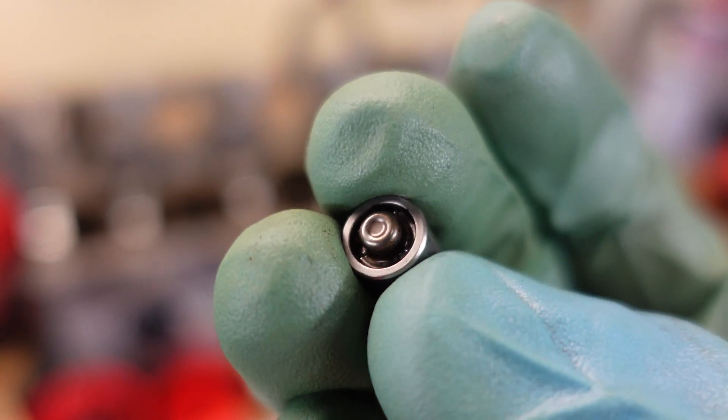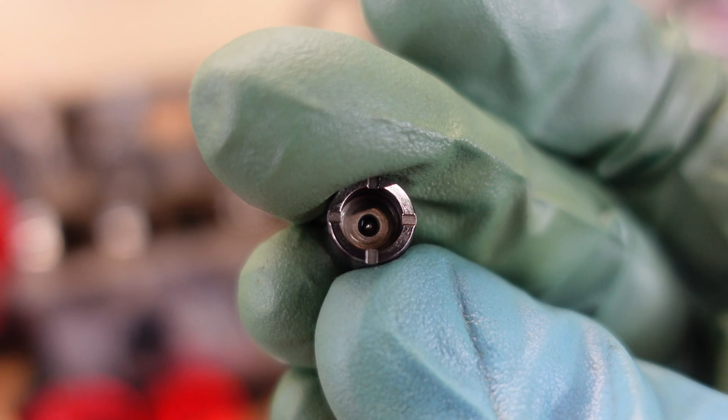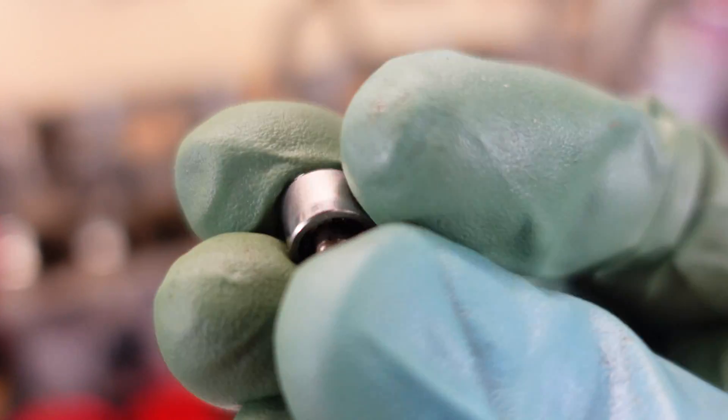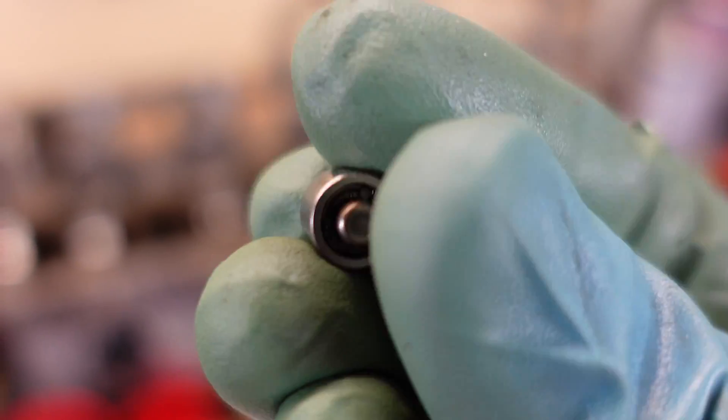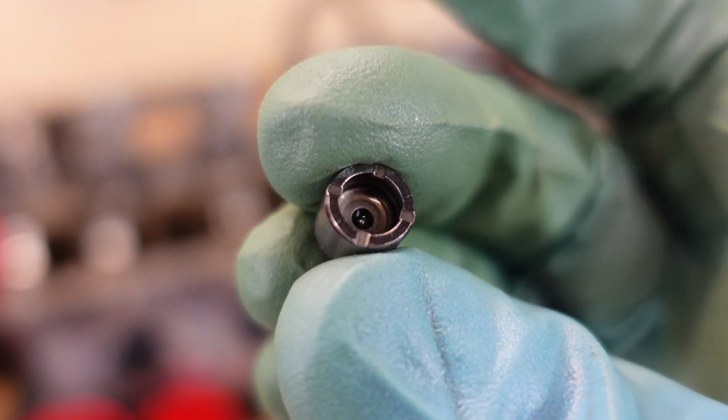And then there's the check valve. And this is a quite delicate piece. You can see a little ball here. And it has a little spring. So if I push down on this little ball the valve will open and let the oil in.